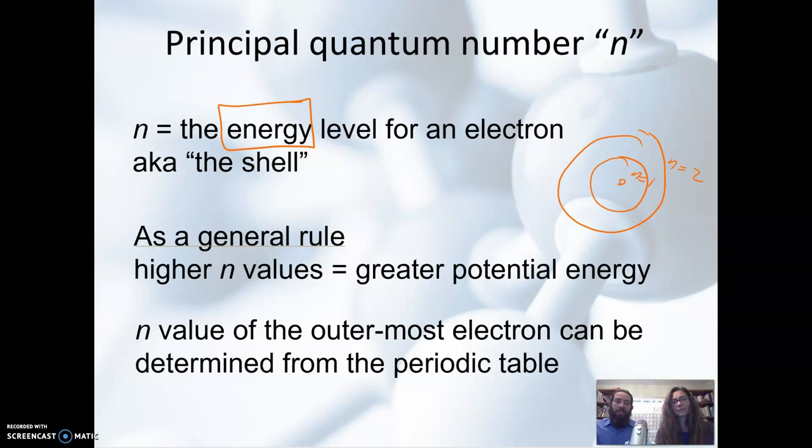And we can figure out n values using our periodic table, but this is only for the outermost electron. And it seems kind of silly at first, like why we would only care about this one electron. Well, being the outermost electron, that's going to help us with our size. And it's really simple to figure out.